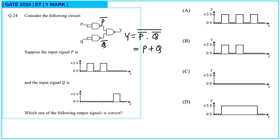OR means if any one of the inputs is one then output will be one. Here input is one, here input is one, here input is one — so output will be one. So only option A is correct.